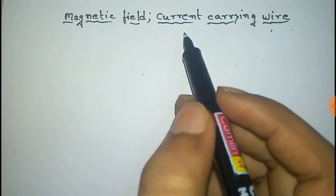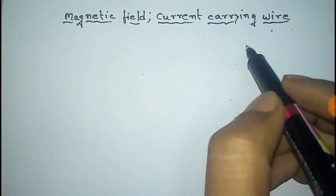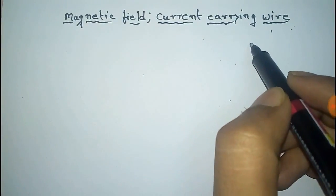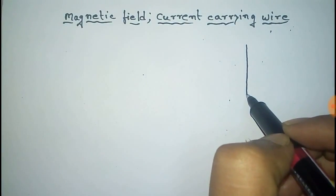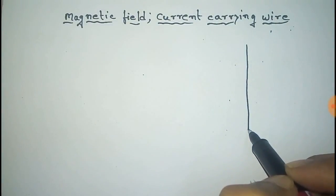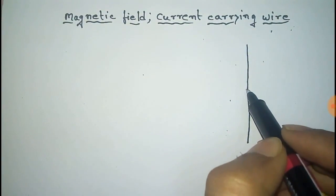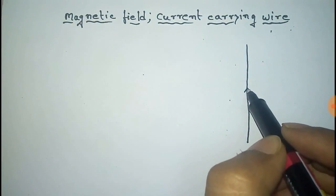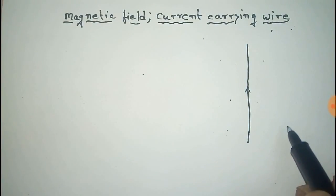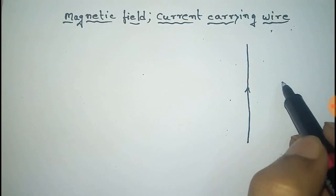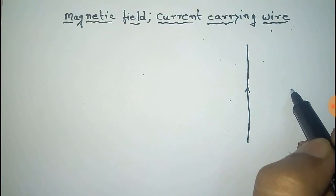We have to find the magnetic field due to a long straight current-carrying wire, in which current is directed in a given direction. We have to find the magnetic field at point P.